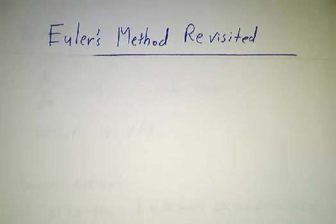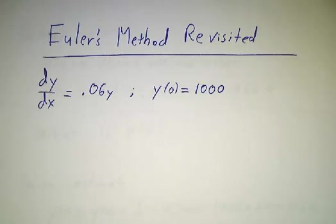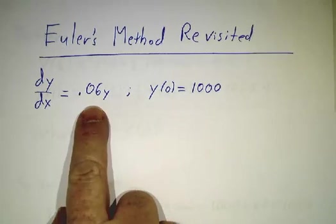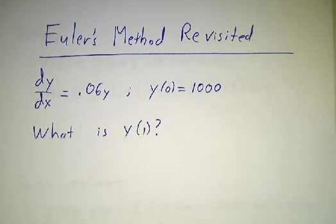Now that we know about direction fields, we can go back and look at Euler's method and draw pictures of what was happening. So remember, our example was we're taking the derivative of a function as 0.06 times a function and the initial value is 1000. We want to know what is the value when x equals 1.